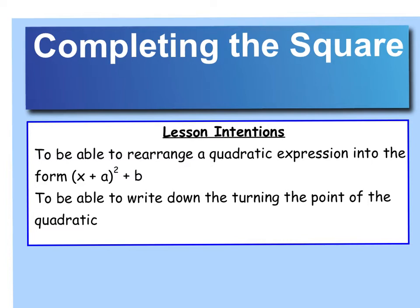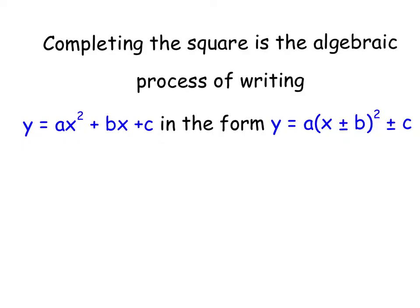Completing the square means we're going to rearrange a quadratic expression into a different form that looks like a bracket squared plus a number. The reason we complete the square is it really helps us write down the turning point of a quadratic — the coordinate of where that smiley or sad face shape starts to turn — but that might mean nothing to you just now depending on the order you've been taught.